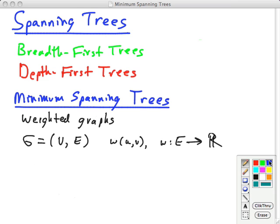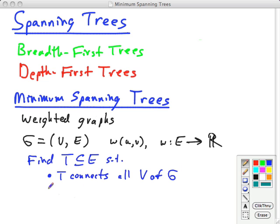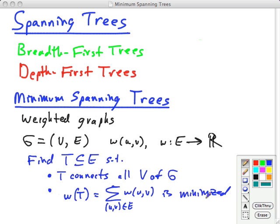So, given these definitions, the minimum spanning tree problem is to find a tree, T, which is a subset of the edges such that these things are true. First of all, T connects all the vertices. And the minimum part, the sum of the weights, we'll say the weight of T is equal to sum across all edges in T, their weight. We want to minimize that. So, that's the basic problem. Some things to note here. Of course, for this to be possible, for T to connect all vertices of G, G has to be a connected graph.